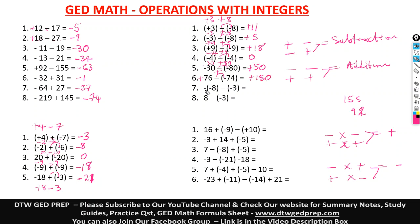Look at this: we have a sign in front, so negative times negative gives positive 8. Then this negative times this negative gives positive 3. So we have positive 8 and positive 3 — we do addition — giving us positive 11, because the bigger number is also positive.